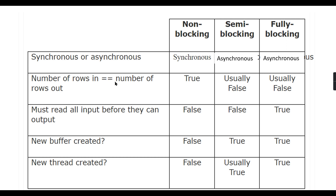For non-blocking transformations, number of rows in equals number of rows out — this is true. For asynchronous ones, this is false. Regarding 'must read all input before output': for non-blocking and semi-blocking, this is not required. You can process a thousand or ten thousand rows at a time and send the output. But for fully blocking, all data must be fully read before it can be transformed — for example, Aggregate.